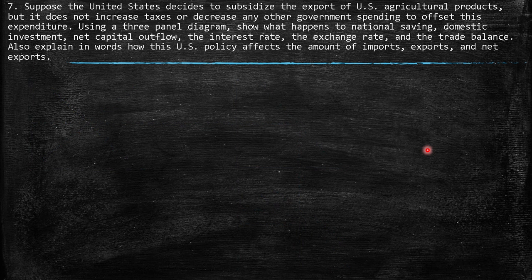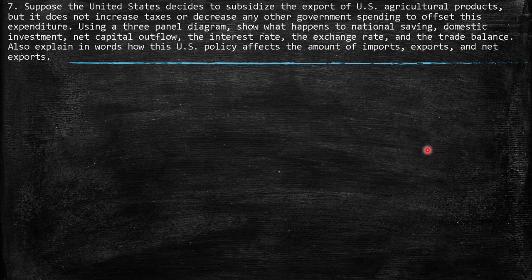Question 7: Suppose the United States decides to subsidize the exports of US agricultural products, but it does not increase taxes or decrease any government spending to offset this expenditure — meaning there is no change in fiscal policy. Using a three-panel diagram, show what happens to national savings, domestic investment, net capital outflow, the real interest rate, the exchange rate, and the trade balance. Also explain how this US policy affects imports, exports, and net exports.